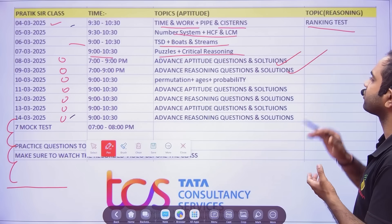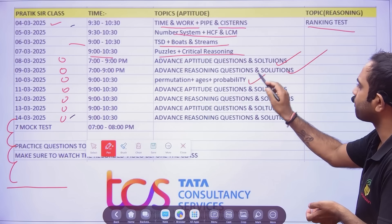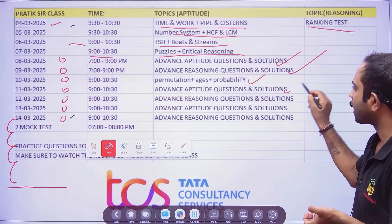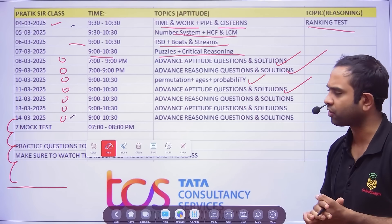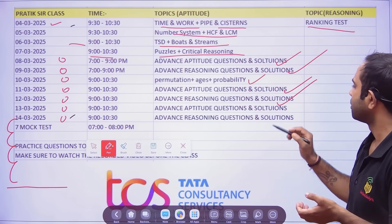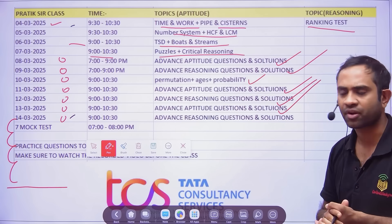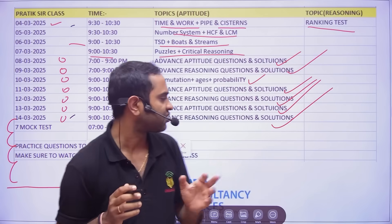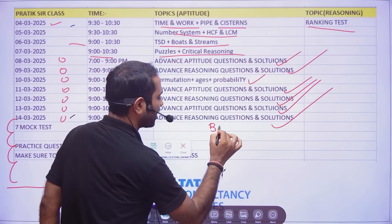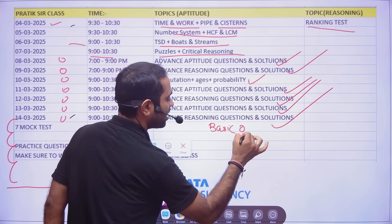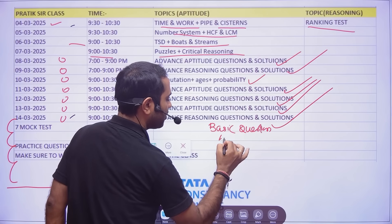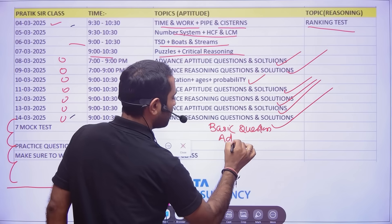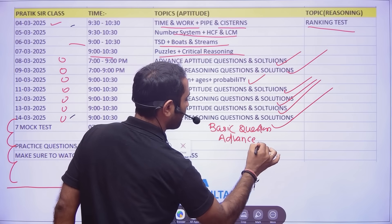From 8th March onwards: Advanced Reasoning questions and solutions. In between I have put Permutation, Combination and Probability, plus indices, then Advanced Aptitude and Advanced Reasoning alternating. 'Advance' here means basic questions plus advanced-level questions together — I didn't spell it out fully to keep it concise.